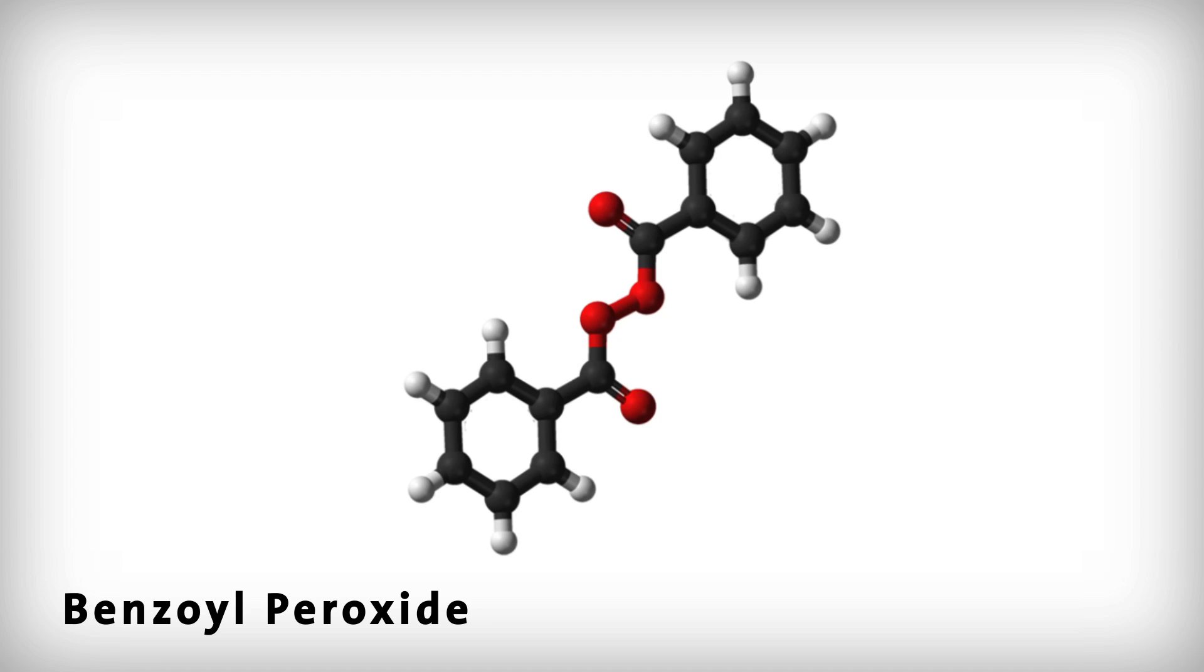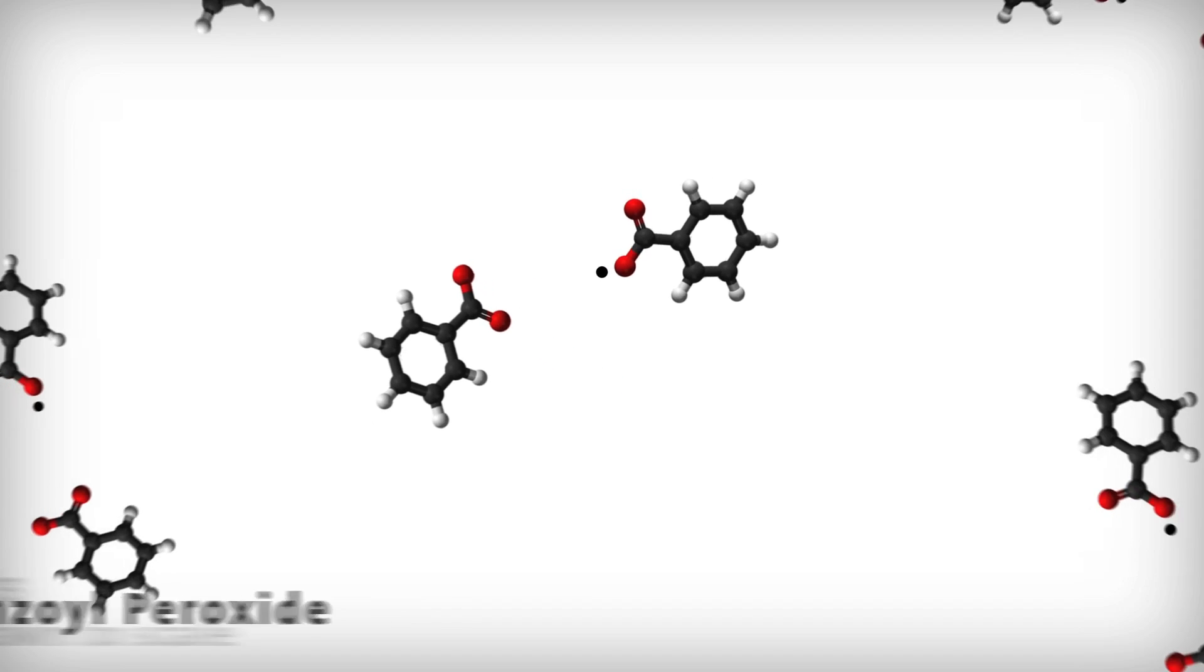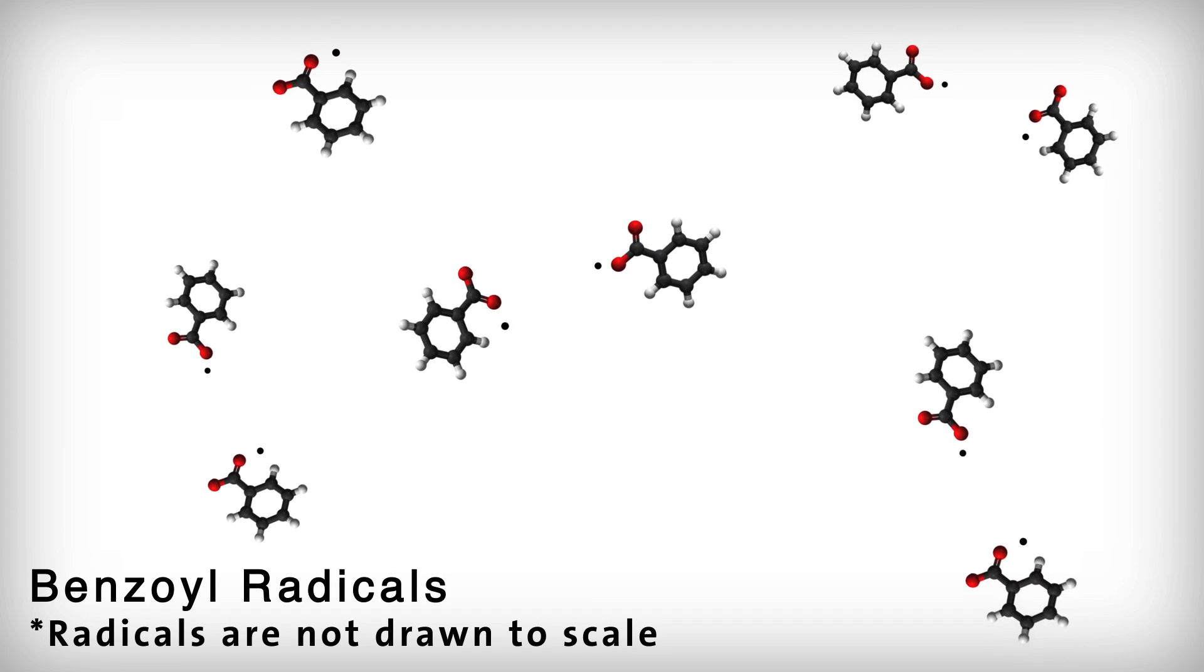This molecule has a very weak oxygen-oxygen bond, so when it reacts with the molecules in bacteria, it's broken down into benzoyl radicals. The presence of an unpaired electron makes the benzoyl radical very reactive. That's because in almost all molecules, electrons exist in pairs.